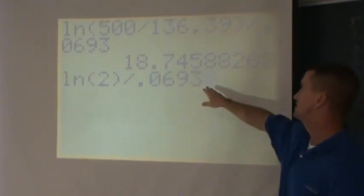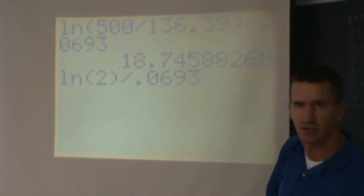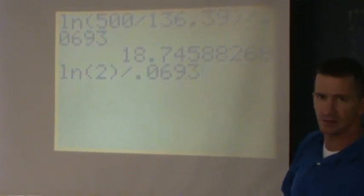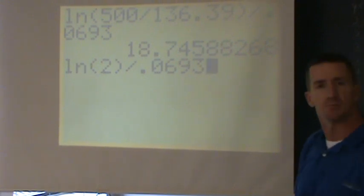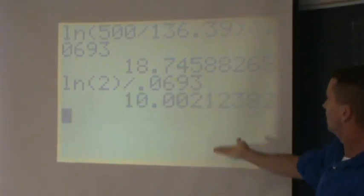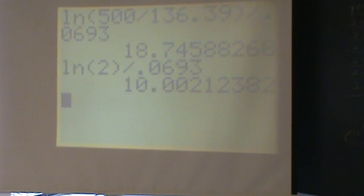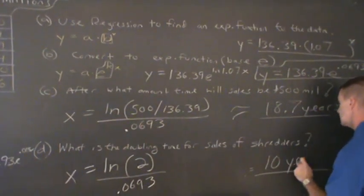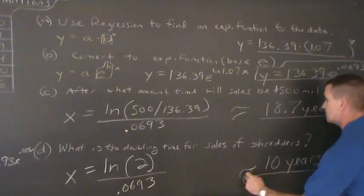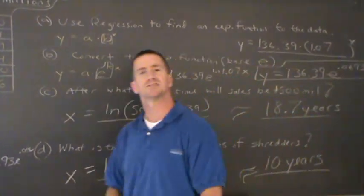And when I've been rounding these decimals during this entire presentation here, it's always good in math, you know, to keep values going out as many places as possible, but, you know, for demonstration purposes, I've been rounding. Let's see what we get. That's approximately 10 years. So, double the time for sale shredders, 10 years. And that's it.